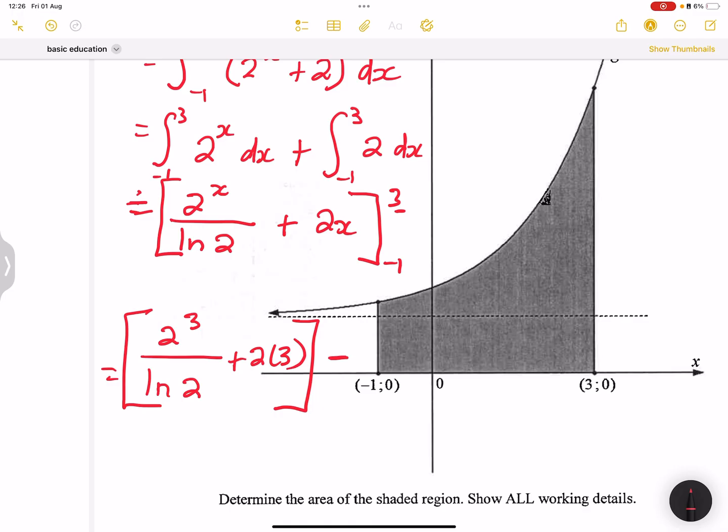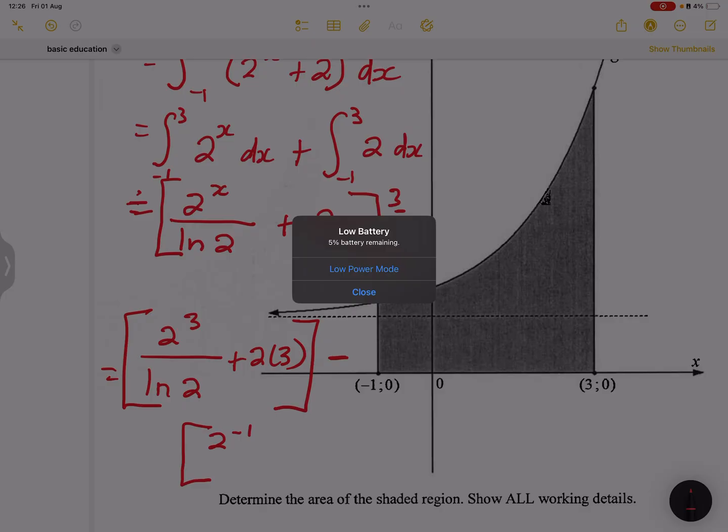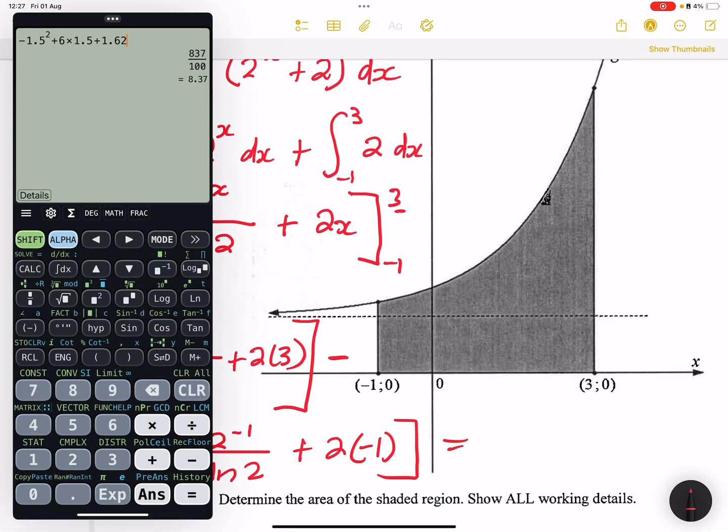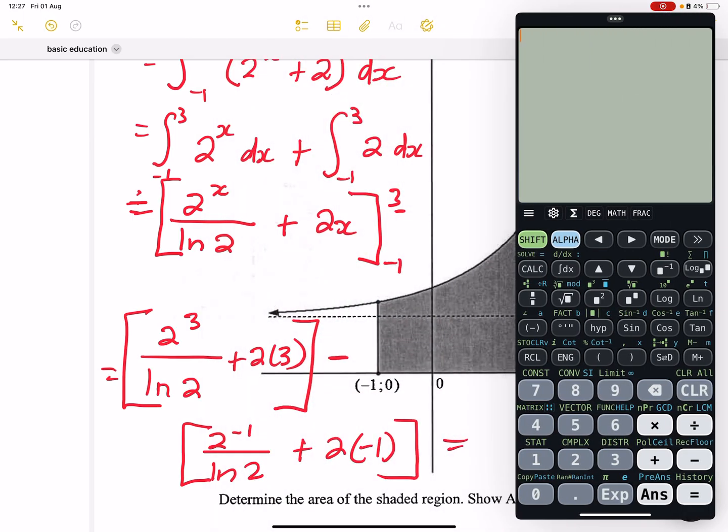That's going to be 2 raised to the exponent of negative 1 divided by ln 2 plus 2 times negative 1. All right. So what do we do? We just simply put this in our calculator. I'm going to do that very quickly because our battery is quickly running out.